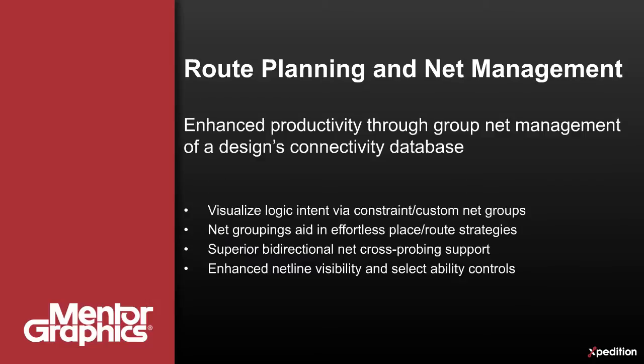Expedition's route planning and net management capabilities assist designers by providing enhanced productivity through group management of the design's connectivity database. Constraint or customized net groups allow users to easily visualize logic connectivity intent, making place and route strategies easy. A fully functional, bi-directional net cross-probing is available, coupled with new and enhanced netline visibility and selectability controls, providing designers a dynamic, improved layout environment. Let's take a quick look at these powerful route planning and net management capabilities.